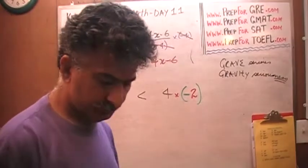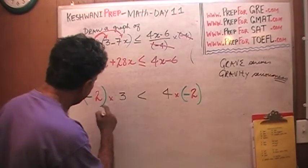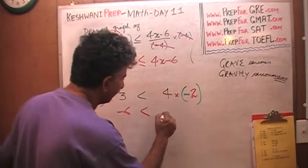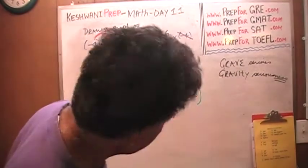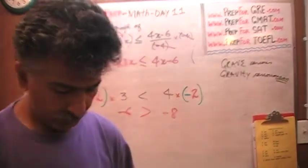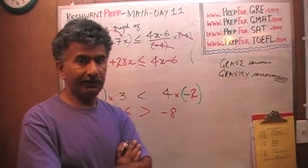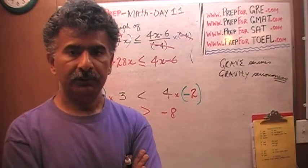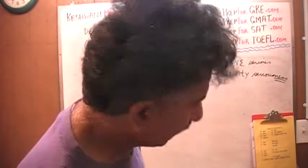The answer is no, we cannot agree anymore. Negative two times three is negative six, which is no longer smaller than negative eight. Negative six is in fact greater than negative eight. So what we learn is: when we multiply both sides of an inequality by a negative number, the direction of the inequality switches.